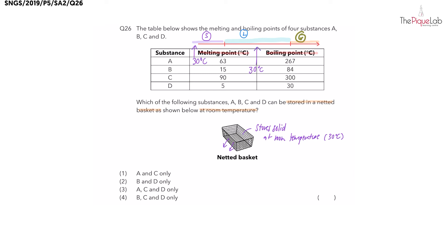For substance C, 30 degrees is below 90 degrees, so substance C is in solid state at this temperature. Finally, for substance D, 30 degrees falls exactly on its boiling point.